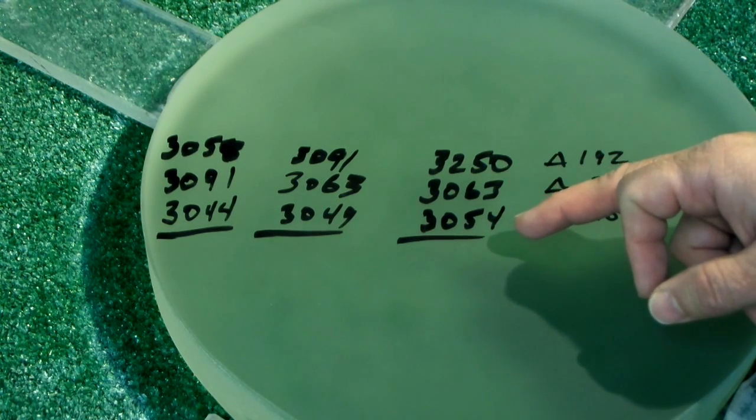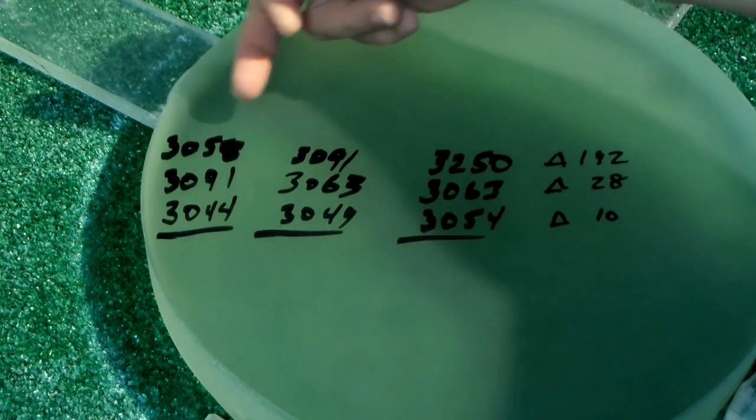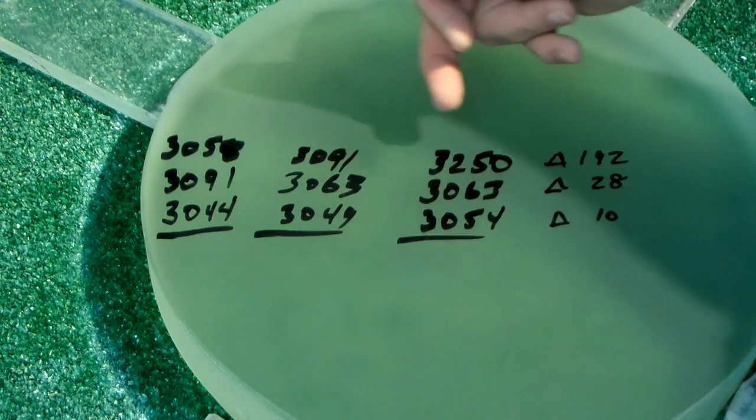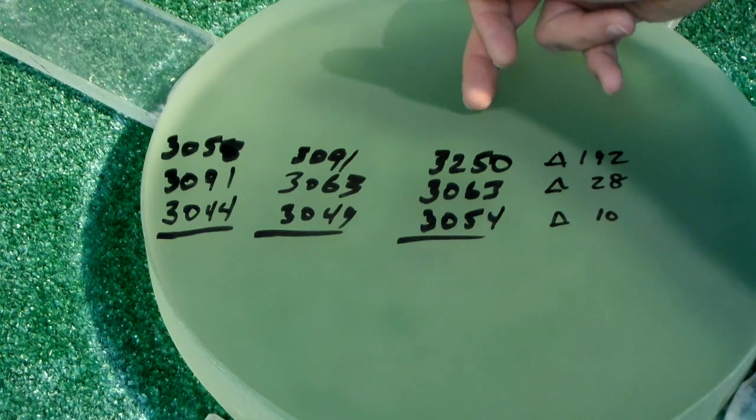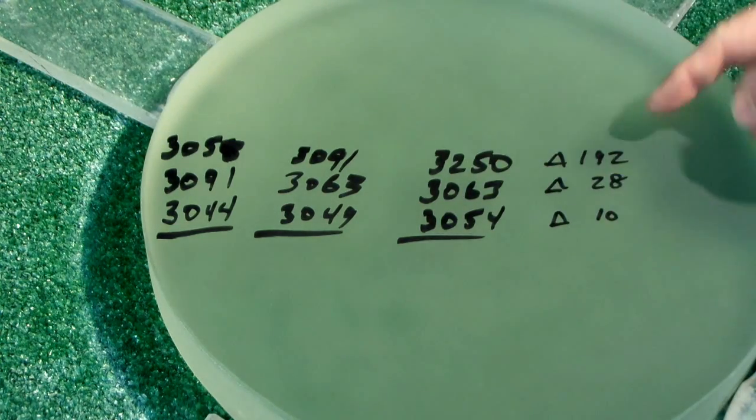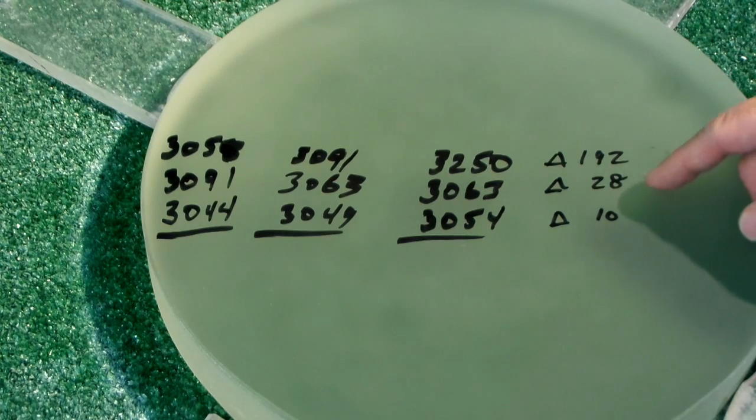You can see we're much more spherical now. If you look at the edge versus the center versus 50%, and find the biggest difference between them, when we started it was 192 millimeters. In the middle of the process it was 28. Now we're down to only 10 millimeters difference, so we're quite spherical.